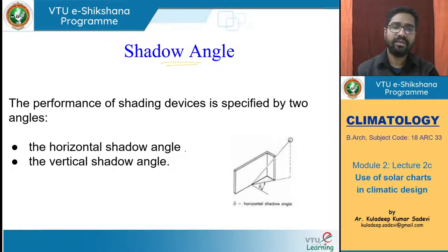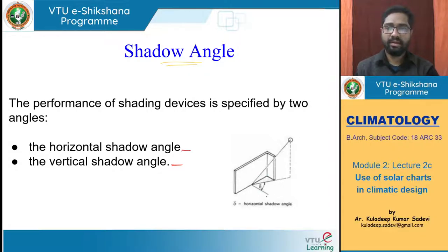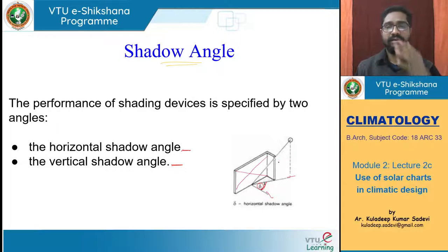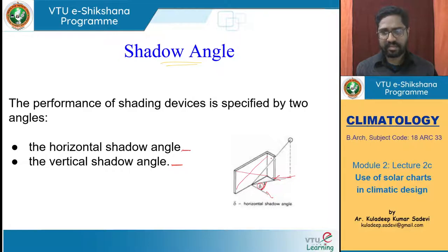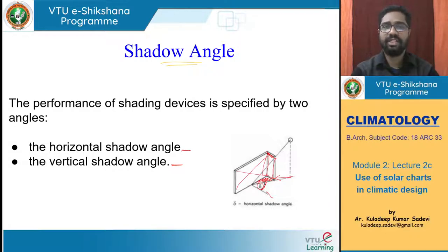To understand shading properly we need two shadow angles: horizontal shadow angle (HSA) and vertical shadow angle (VSA). Delta — the difference between solar azimuth and wall azimuth — relates to these. For a wall that needs shading, we know the sun radiation direction in the horizontal plane, and we can determine the required projection to shade that wall from it.